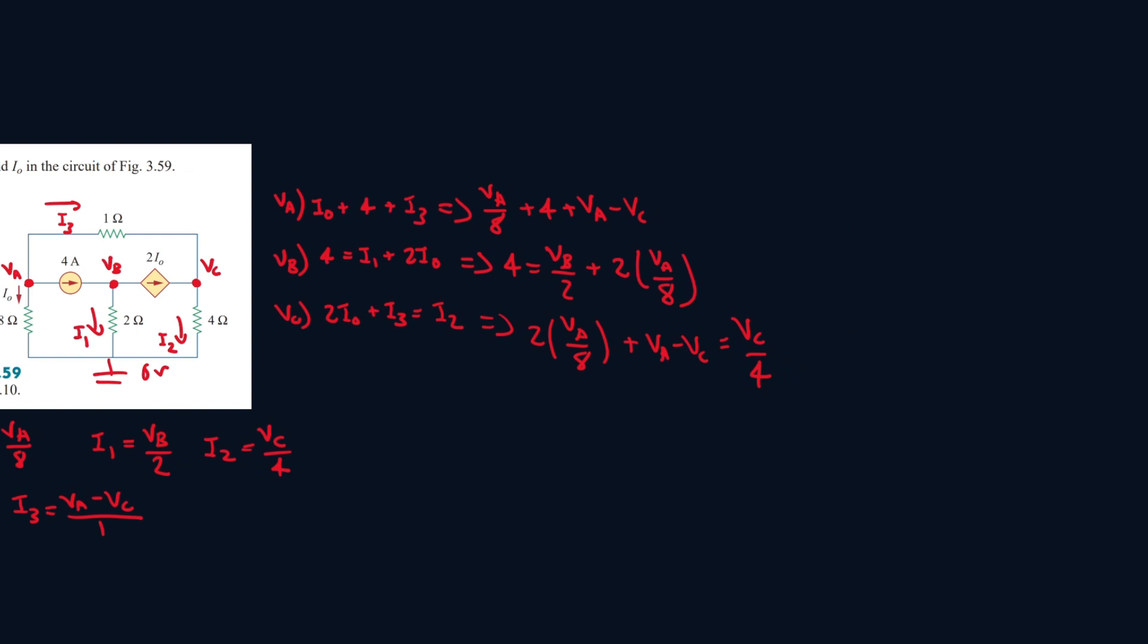All right, now let's simplify these more. So we have VA over 8, which is 0.125 VA, plus 1VA, so it'll be 1.125 VA minus VC, and let's bring 4 to the other side, so it'll be minus 4. Second equation, we have 4, and this will be equal to VB over 2, which is 0.5 VB, plus 2VA over 8, so it'll be 0.125 VA.